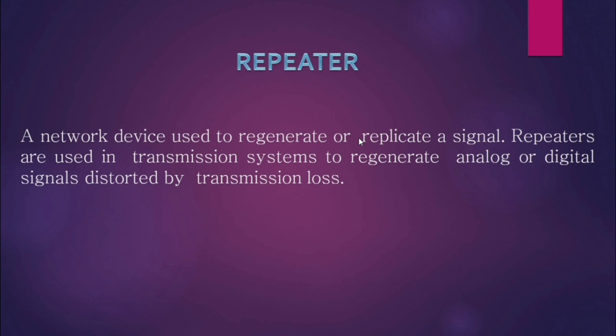A repeater is a network device used to regenerate or replicate a signal. Repeaters are used in transmission systems to regenerate analog or digital signals distorted by transmission loss. When sending data over a long path, signal loss or distortion can occur due to weather or transmission materials, so a repeater regenerates or replicates the signal.